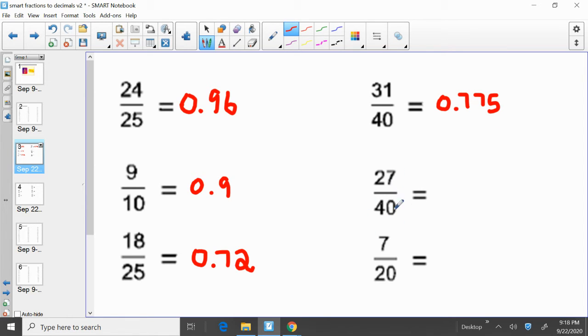Twenty-seven fortieths. Twenty-seven over forty. Take twenty-seven divided by forty, you get zero point six seven five. And again, it's just a simple division. Twenty-seven divided by forty equals zero point six seven five.